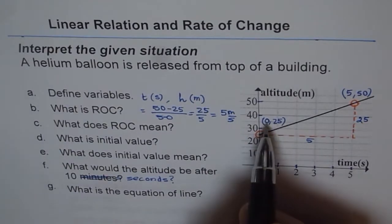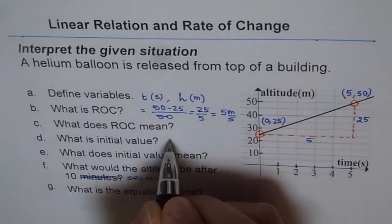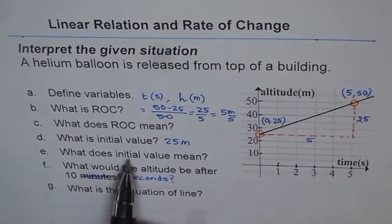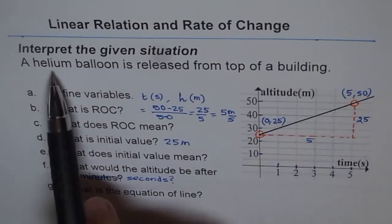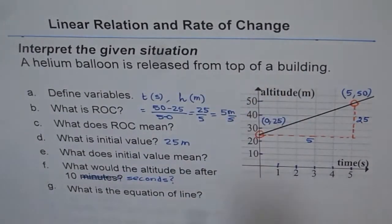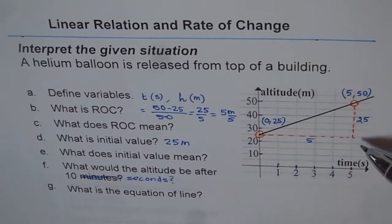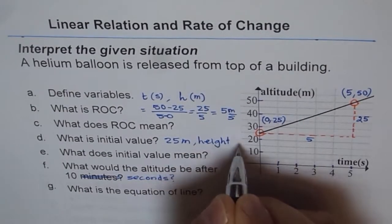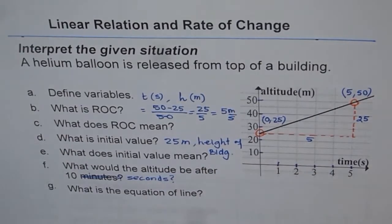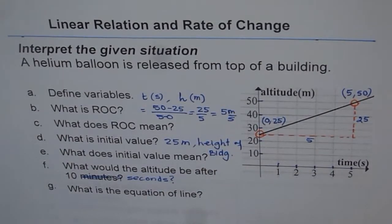The initial value at time 0 is 25 meters. What does the initial value mean? It means the height at the time this balloon was released. Since a helium balloon is released from the top of a building, the initial value also means the height of the building. You may see questions asking: what is the height of the building? The answer is 25 meters. So the initial value signifies the height of the building.